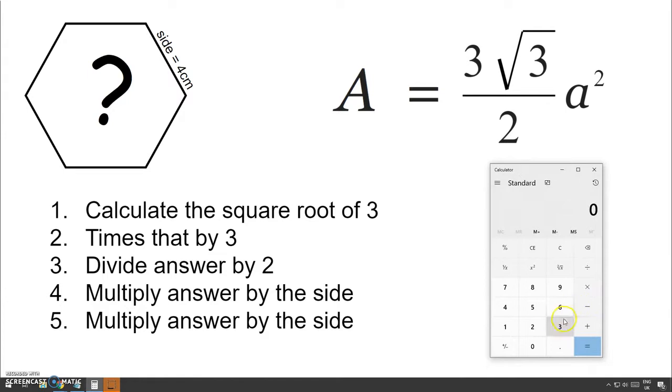is we calculate the square root of 3 by putting 3 and pressing the square root button. And that will get us some ridiculously long number there. Ignore that. Multiply that number by 3. And that gives us another ridiculous number. Divide that answer by 2, because now we're doing this part of the equation.